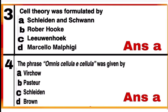The cells are the structural and functional unit of all living organisms. Question 4: The phrase 'Omnis cellula e cellula' was given by option A — Rudolf Virchow, who modified the cell theory. 'Omnis cellula e cellula' means new cells are developed by division of pre-existing cells.